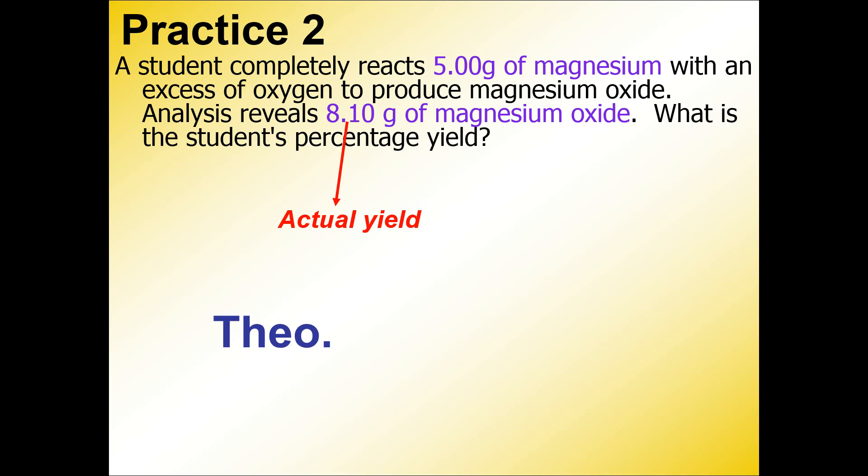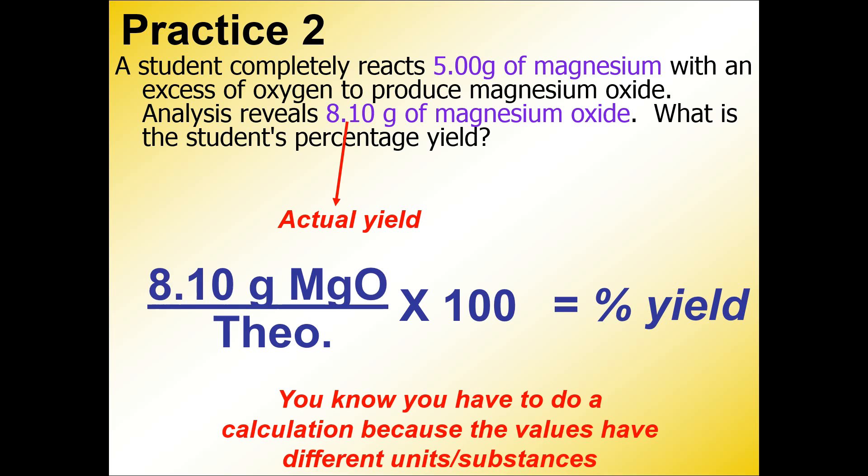...that you actually have a reaction built into this problem. We have magnesium with oxygen to produce magnesium oxide. So you might want to hit pause and write an equation for magnesium with oxygen to produce magnesium oxide.